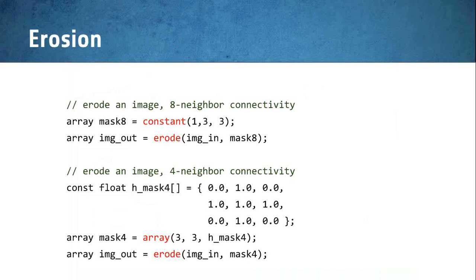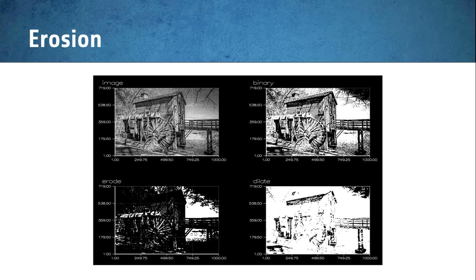For erosion, you just create some sort of mask and call a function using that mask — it's a two-step process but a lot of the work has already been implemented. You just supply the parameters. Doing a lot of these operations is straightforward, and we can show you how easy it is to display the results on screen.